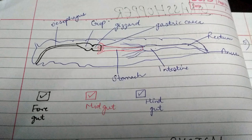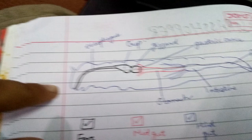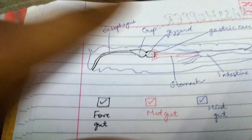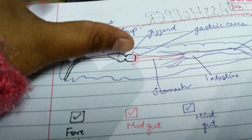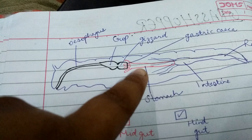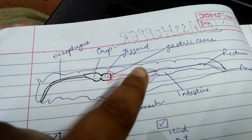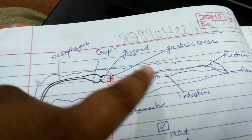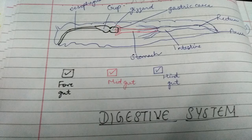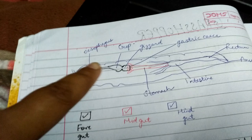Today I am talking about the digestive system of grasshopper. This is a diagram of the digestive system of grasshopper. We have foregut, midgut, and hindgut. In foregut we have esophagus, crop, and gizzard. Midgut is composed of gastric ceca and stomach. Hindgut is composed of ileum, colon, rectum, and anus. At the junction between the midgut and hindgut, we have Malpighian tubules.